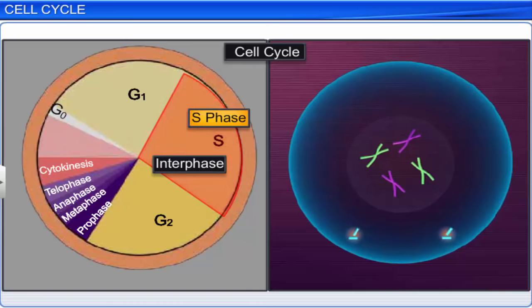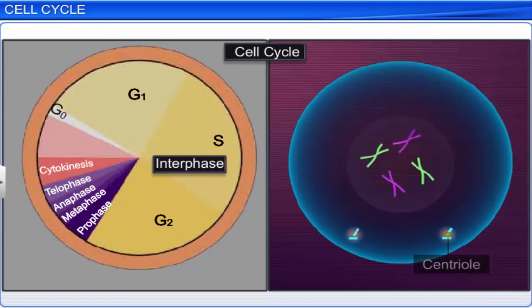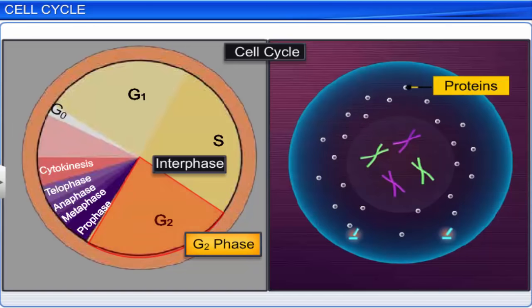The centriole begins to duplicate in the cytoplasm. Finally, in the G2 phase, or gap 2, the cell prepares for mitosis and cell division by synthesizing proteins while the cell continues to grow.